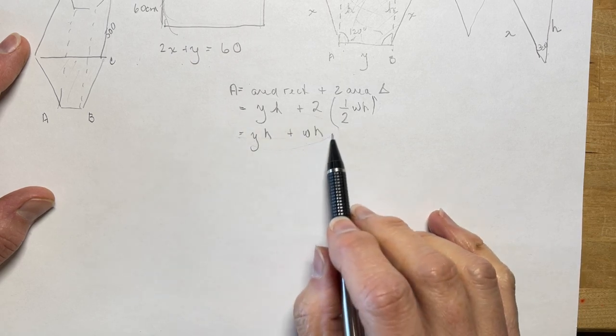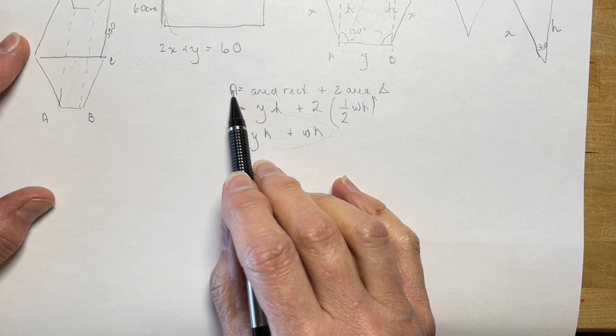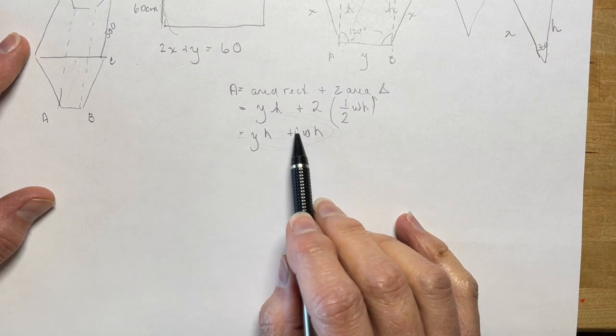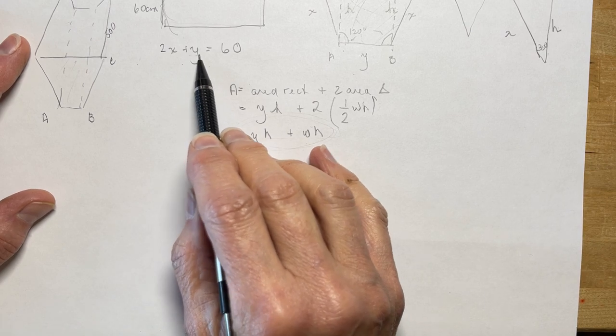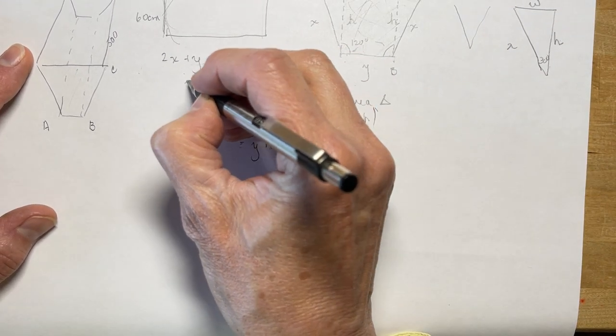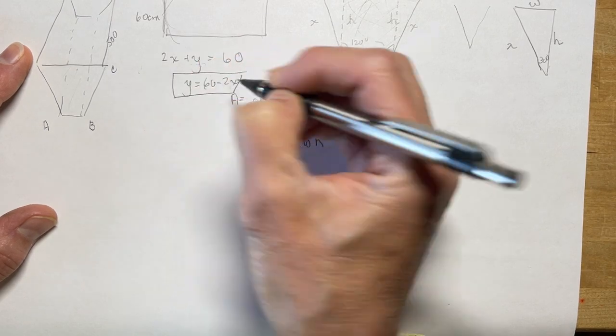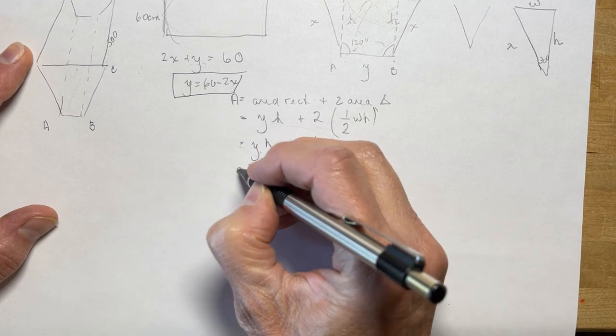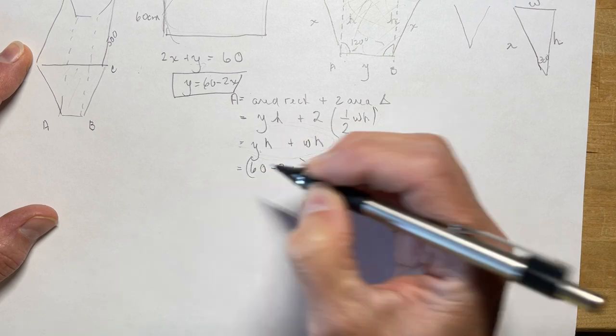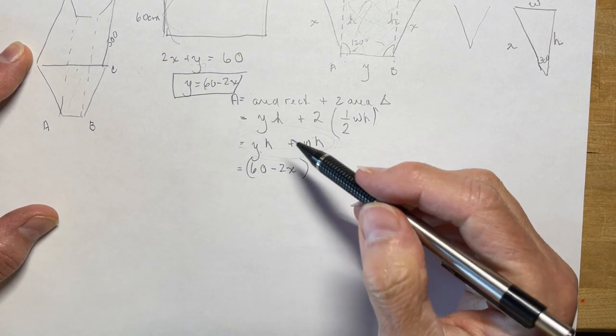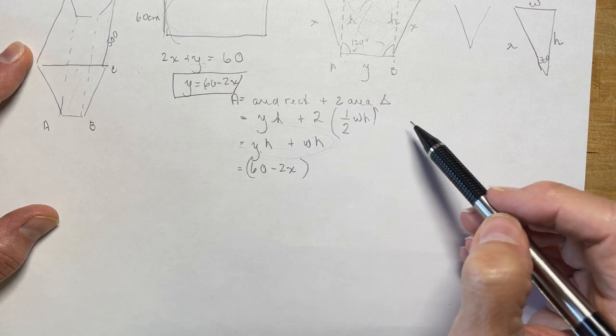Now I want to write all these variables in terms of x so that I can take my A prime in terms of x. I only want one variable here and I already have one for the y here. Very simply I could say that y is equal to 60 minus 2x. So let's put that here right now, 60 minus 2x.